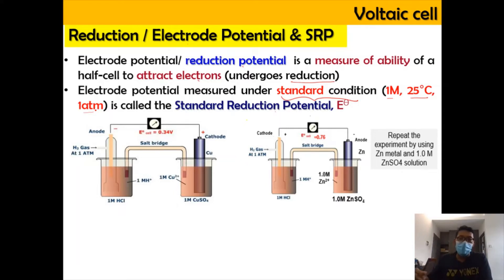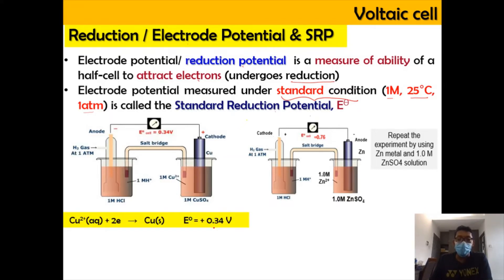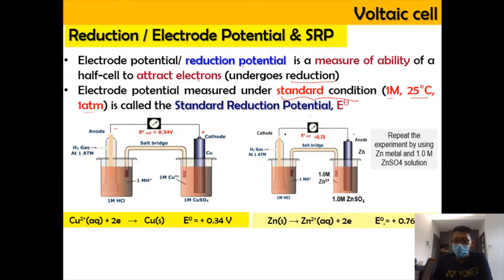When the SHE is connected with copper, the standard reduction potential (SRP) for copper is +0.34 V. Copper at the cathode undergoes reduction, giving an E⁰cell of +0.34 V. When SHE is connected as cathode and zinc is connected as anode, the E⁰ value obtained is 0.76 V.